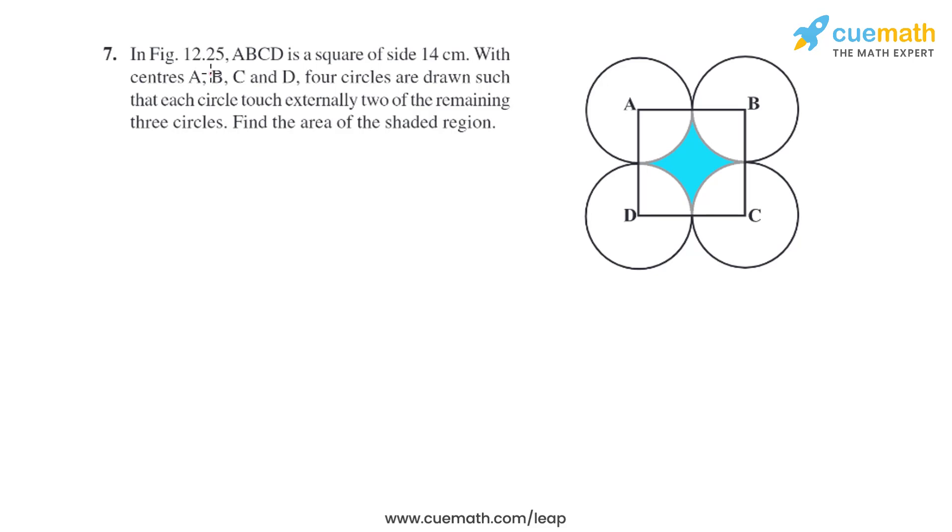Question 7: In the figure, ABCD is a square of side 14 centimeters. With centers A, B, C, and D, four circles are drawn such that each circle touches externally two of the remaining three circles.